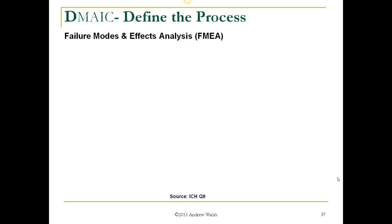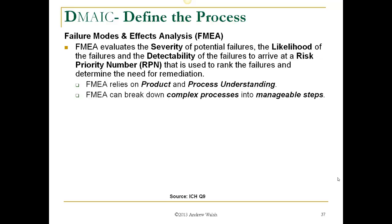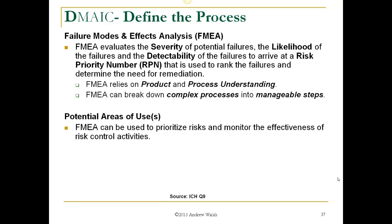Another very important tool for looking at your process is Failure Modes and Effects Analysis, also known as FMEA. FMEA evaluates the severity of potential failures, the likelihood of those failures, and their detectability, to arrive at a risk priority number (RPN) used to rank failures and determine the need for remediation. FMEA relies on product and process understanding, which are very important to the FDA in terms of pharmaceutical products, and can break down complex processes into manageable steps.